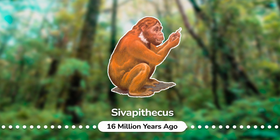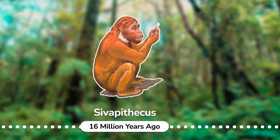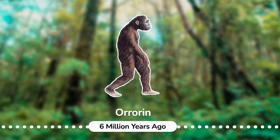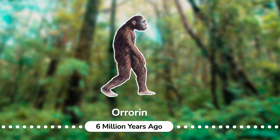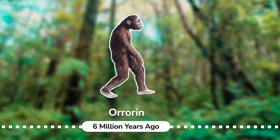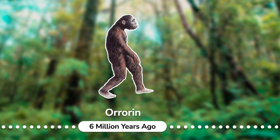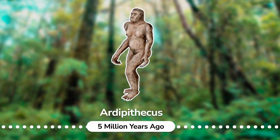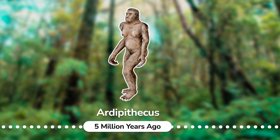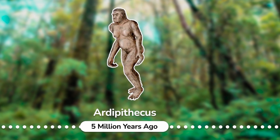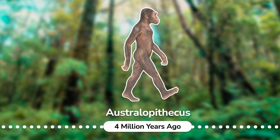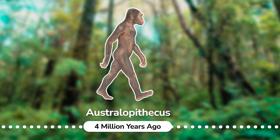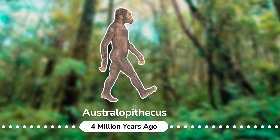Sahelanthropus: a genus of extinct apes. Orrorin: a postulated early species of Hominini discovered in 2000; its discovery was used to argue against the hypothesis that australopithecines are human ancestors. Ardipithecus: a genus of an extinct hominin that lived during the late Miocene and early Pliocene epochs in the Afar Depression, Ethiopia. Australopithecus: a genus of early hominins that existed in Africa during the late Pliocene and early Pleistocene.